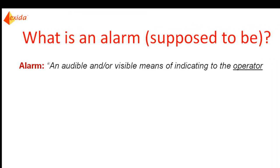Let's begin by talking about what an alarm is supposed to be. The ISA 18.2 Standard on Alarm Management defines an alarm as an audible and/or visible means of indicating to the operator. Notice the emphasis on operator — the target of the alarm system is the operator, not the process control engineer or maintenance technician.